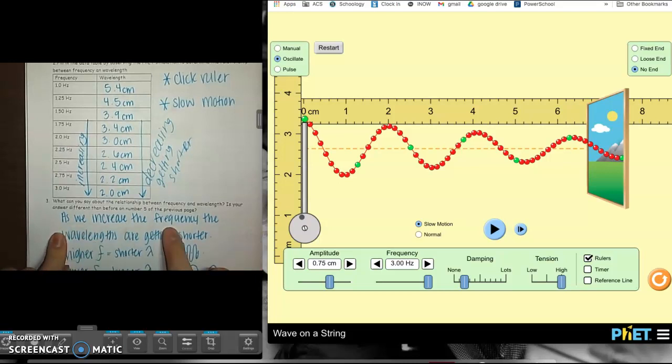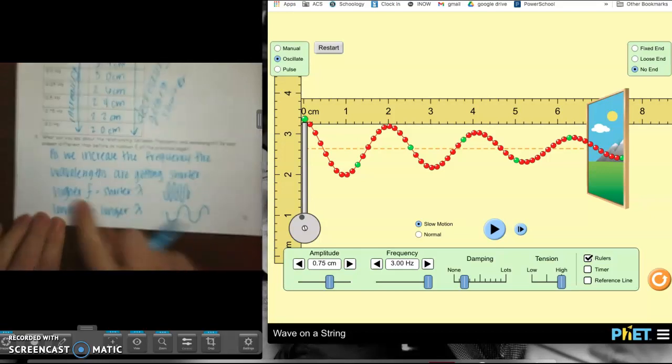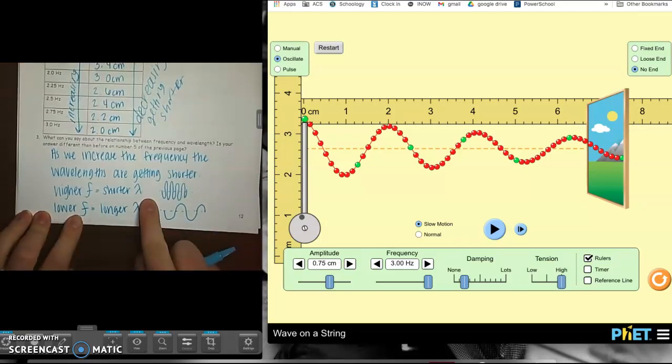So that is going to be our answer for number 3. So as we increase frequency, the wavelengths are getting shorter. So our hypothesis on our previous lab was the higher the frequency, the shorter the wavelength. The lower the frequency, the longer the wavelength.